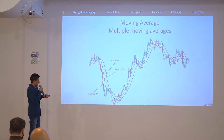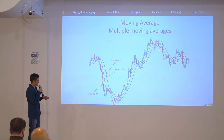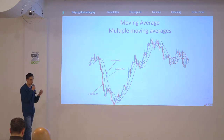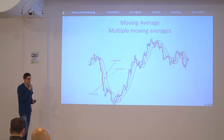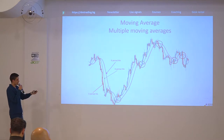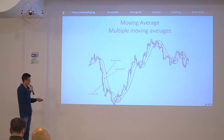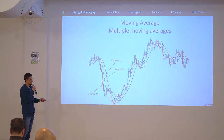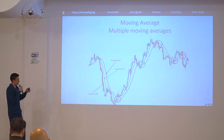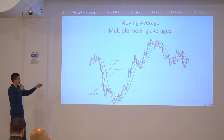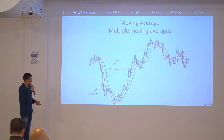We have the same thing here but with an uptrend — the two averages are crossing the third one from below, meaning we are entering into an uptrend. Since the averages are aligning themselves, this is a strong indication that this uptrend might actually continue a bit longer, as it did in this case.